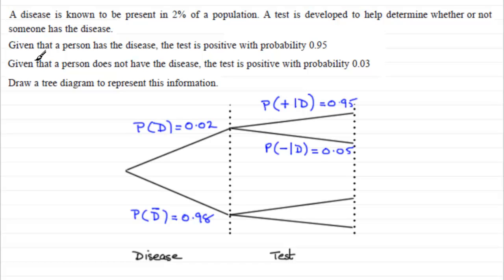And a similar idea is going to follow with this one. Given that a person does not have the disease, the test is positive with a probability of 0.03. This is someone not having the disease, so the probability that they test positive given that they do not have the disease is 0.03.